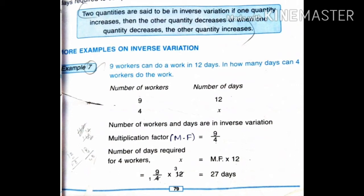First, write the multiplication factor (MF). MF equals 9 by 4. Next, find the x value — the number of days required for four workers. So x equals MF into 12, which is 9 by 4 into 12. The y value is 12 and the given value is 9 by 4.